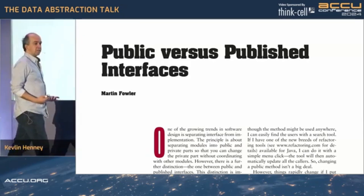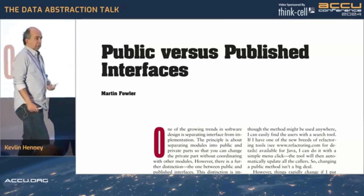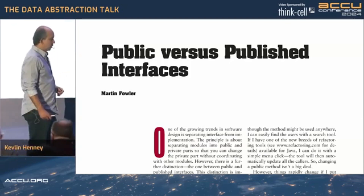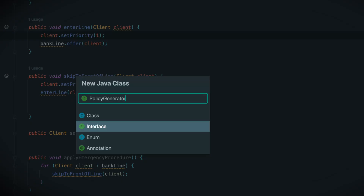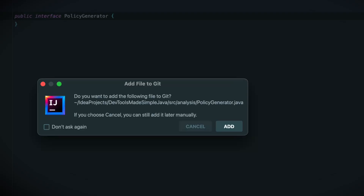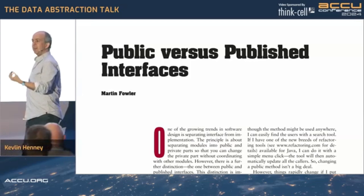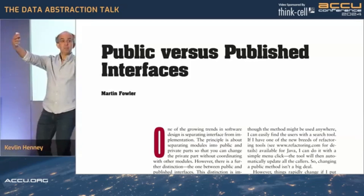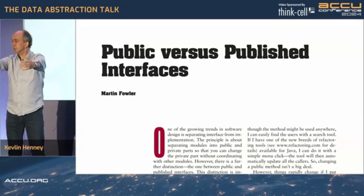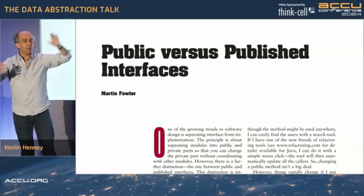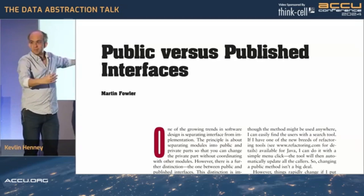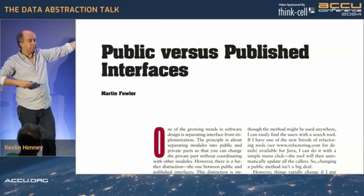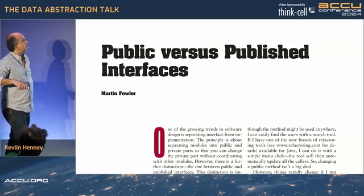Our languages typically don't have these as a construct. It looks exactly the same — if I go into Java, a public interface looks like any other public interface. If I'm in C++, this header file looks like any other header file. This becomes a social convention: you can rely on this, I can support it. This is ours, this is separate, and we can change it freely. We may be able to enforce that in various ways.